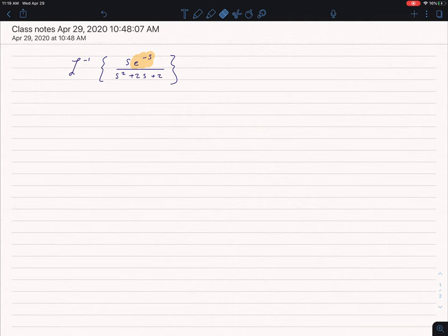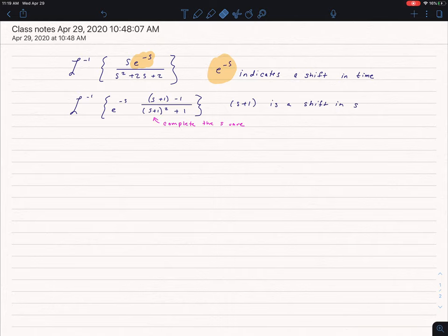This e to the negative s indicates that we're going to have a shift in time. So if I pull that out and then look at what's left, that s over s squared plus 2s plus 2, I recognize that I also have to find that shift in s. And to do that, I'm going to complete the square,